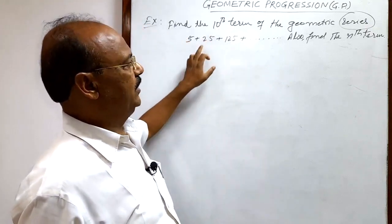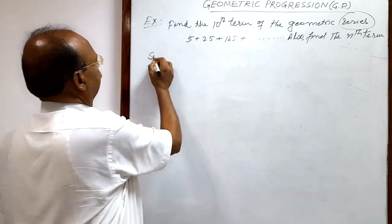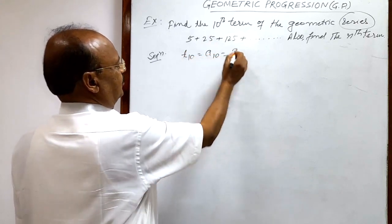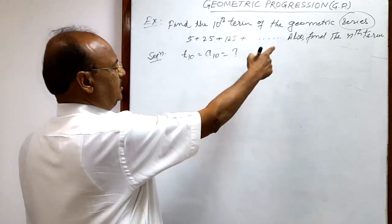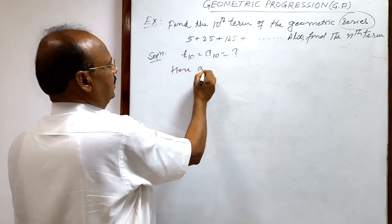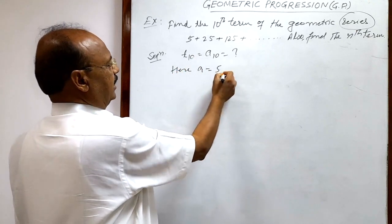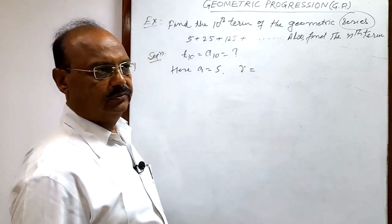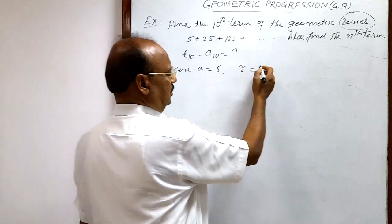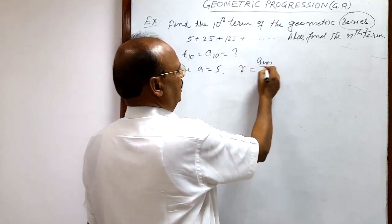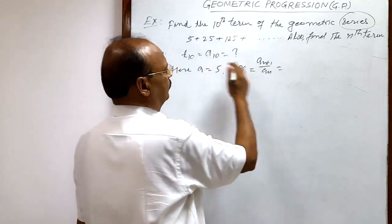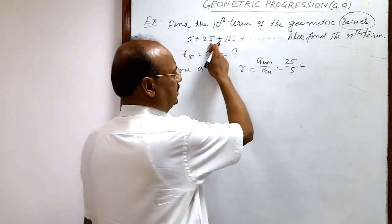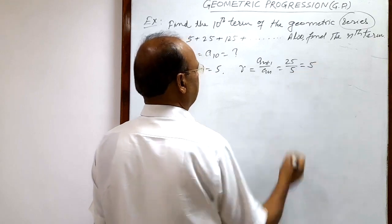We have to find out the 10th term of this geometric progression, written as t10 or sometimes a10. In this series, the first term, generally denoted by a, is equal to 5. And r, which is the common ratio, is found by dividing two consecutive terms — that is, a(n+1) divided by an. Dividing the second term by the first term, or the third term by the second, we get r equal to 5.